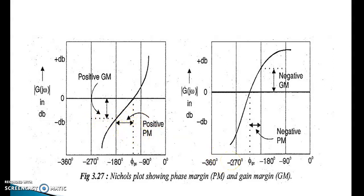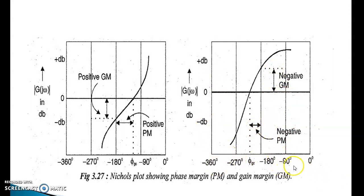Figure 2 also shows the same diagram — φ_Gc with respect to G(jω) in decibels. This is the reference line; values above this line are positive and values below are negative. This one indicates the negative phase margin value, and this shows the positive and negative phase margin values. The phase axis shows: 0, minus 90, minus 180, minus 270, and minus 360 degrees.